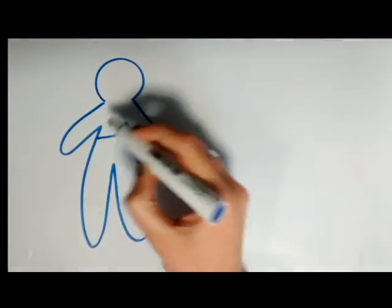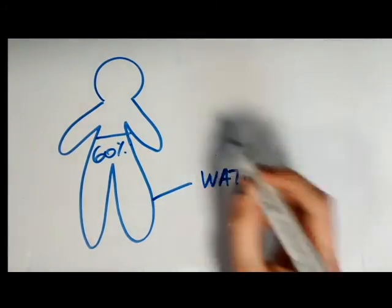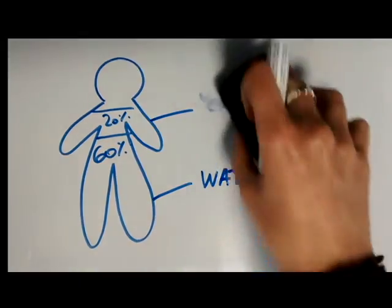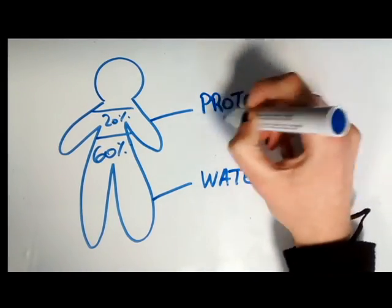If I asked what the body is mainly made of, most people would rightly answer water. But what's the second most abundant component of the human body? Proteins.